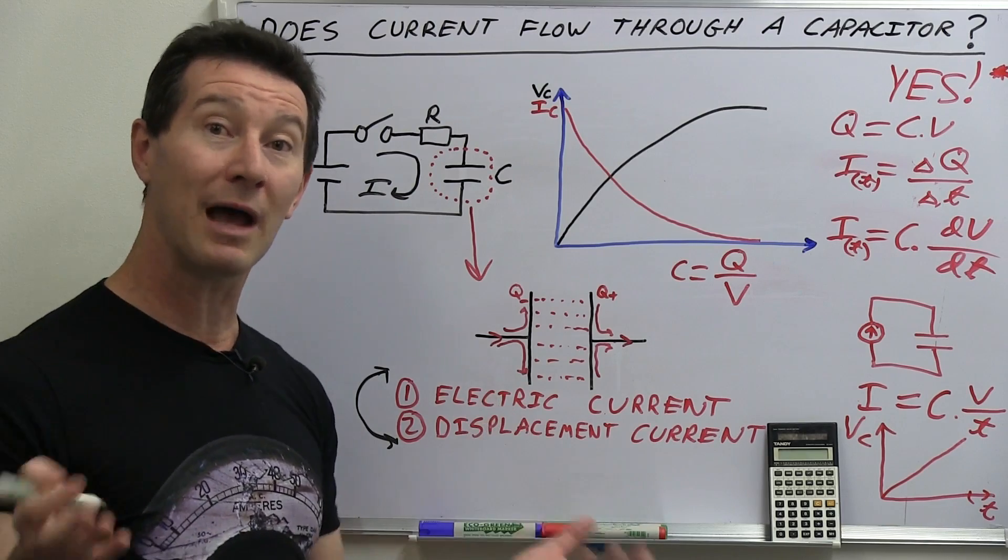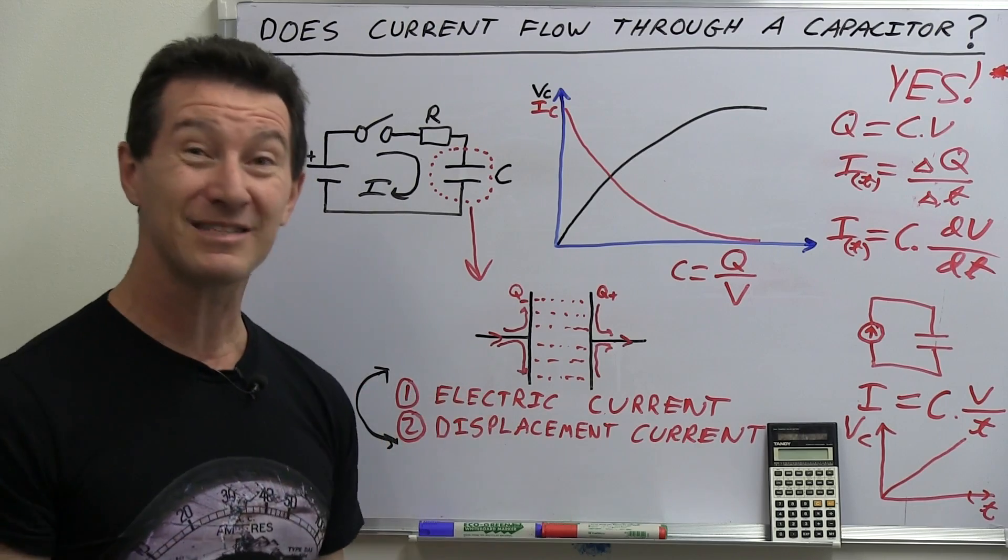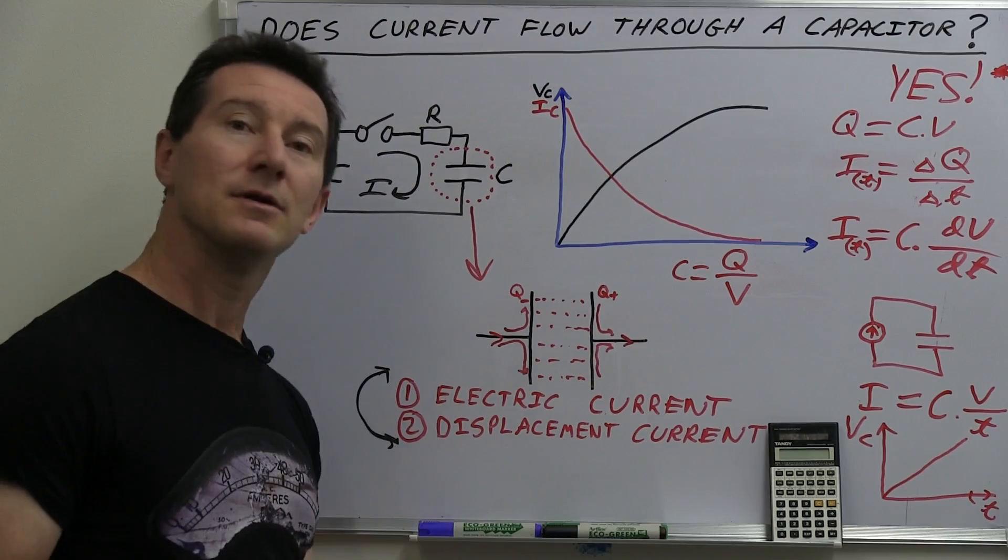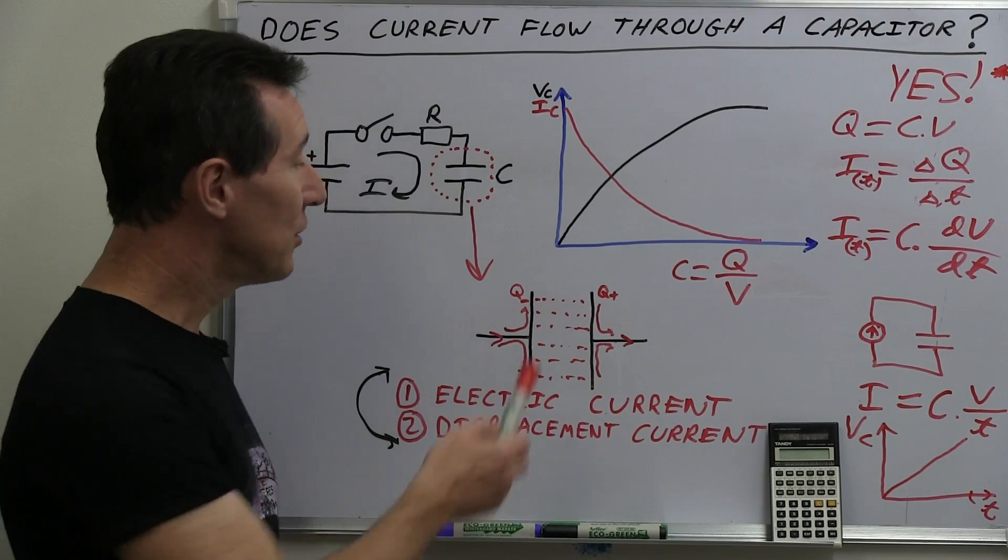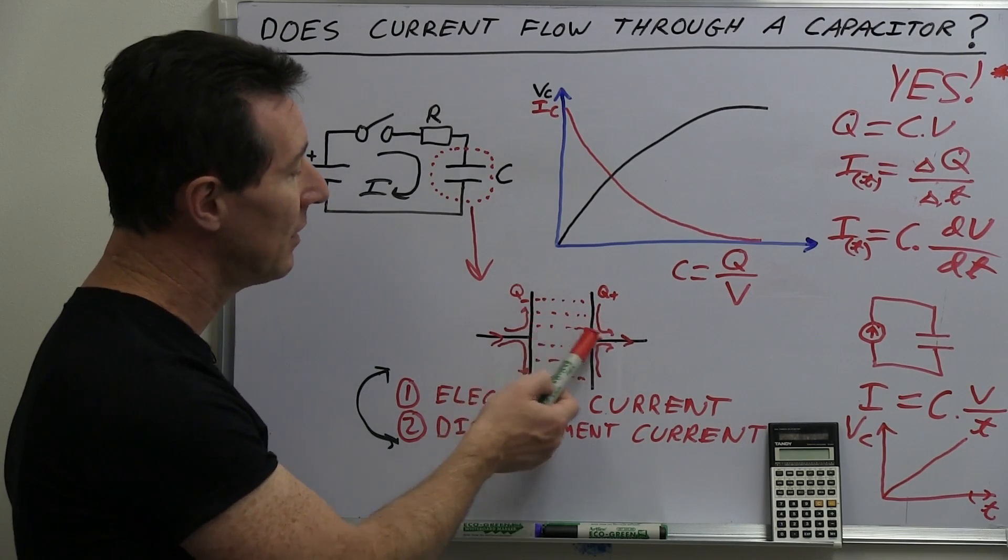So that's how electromagnetic waves can travel through a vacuum. And it gets really, really nasty. And I don't have time to go into it. So as you charge up a capacitor, you're changing the electric field. You're varying the electric field between the two plates.